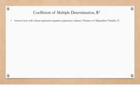To determine how well a regression equation represents a data set, you use the coefficient of multiple determination, or R squared.